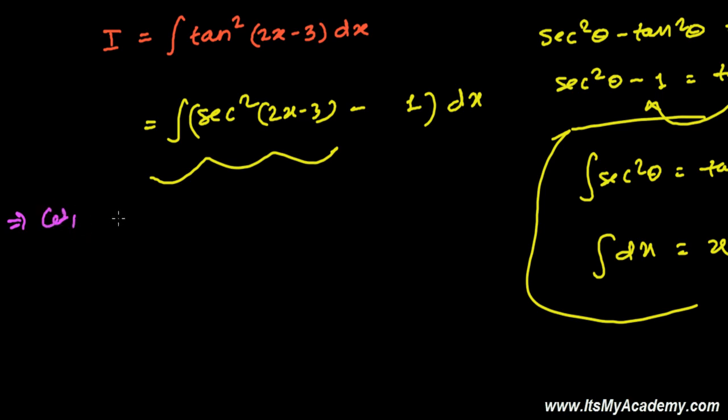So what I'm going to do, let 2x minus 3, t equals to 2x minus 3, so dt over dx is going to be 2. And simply dx is going to be dt over 2. I hope you understand this.